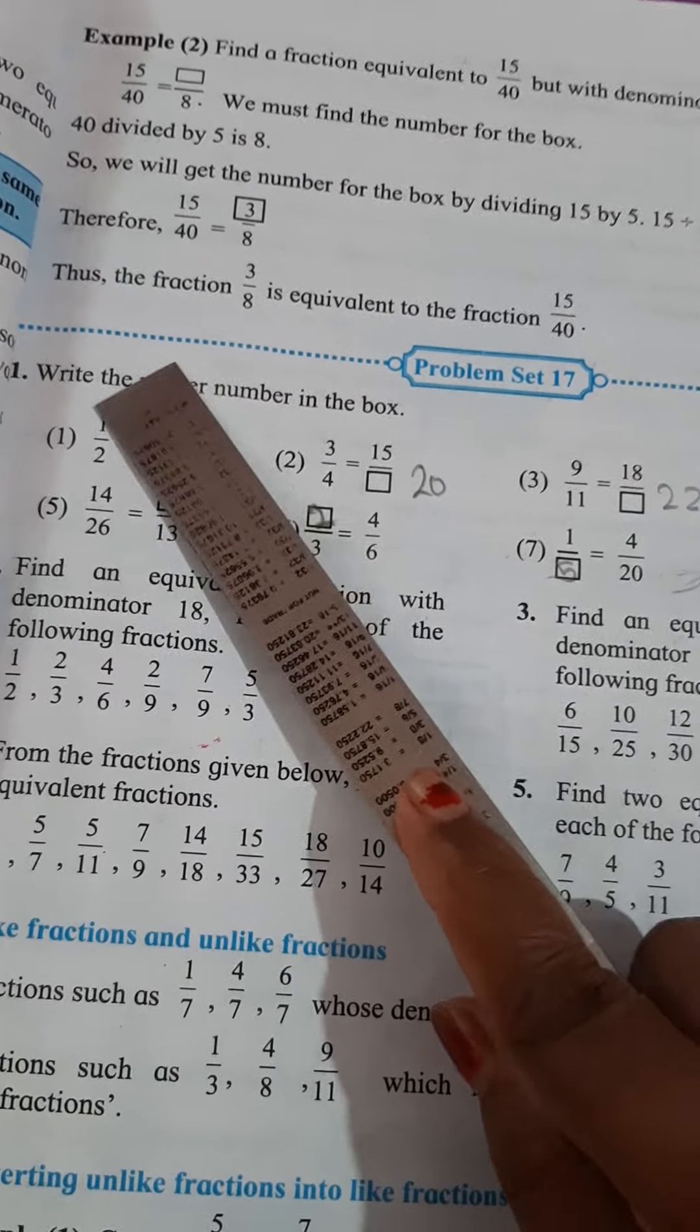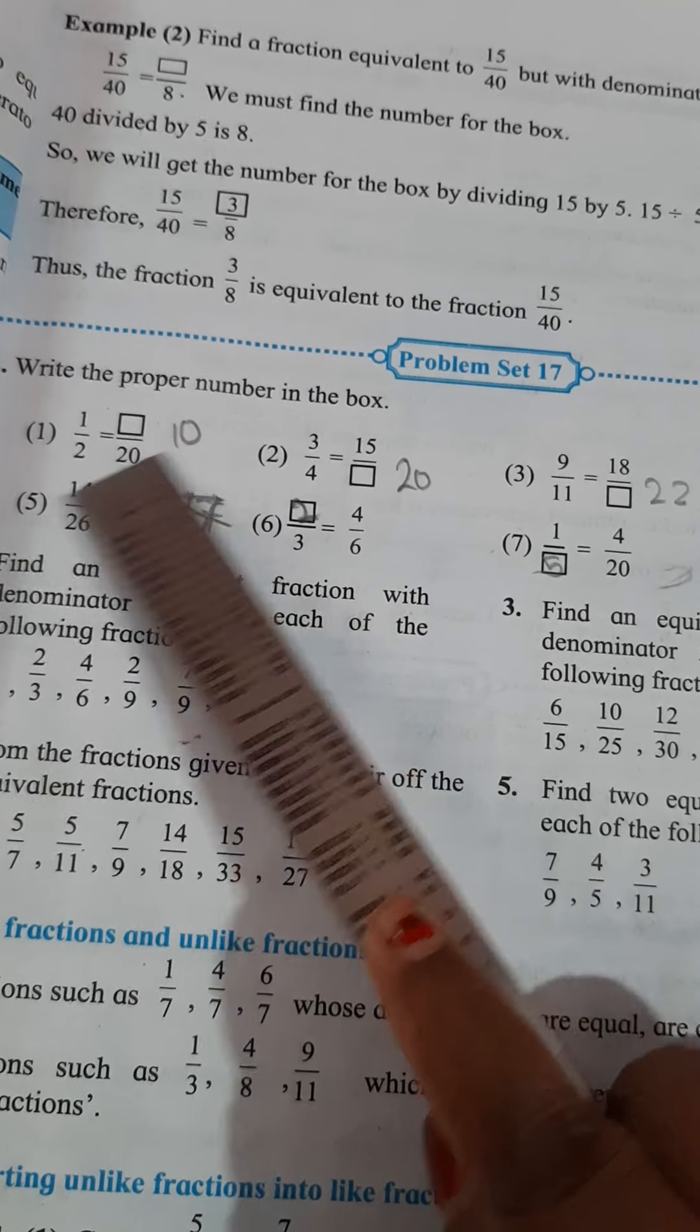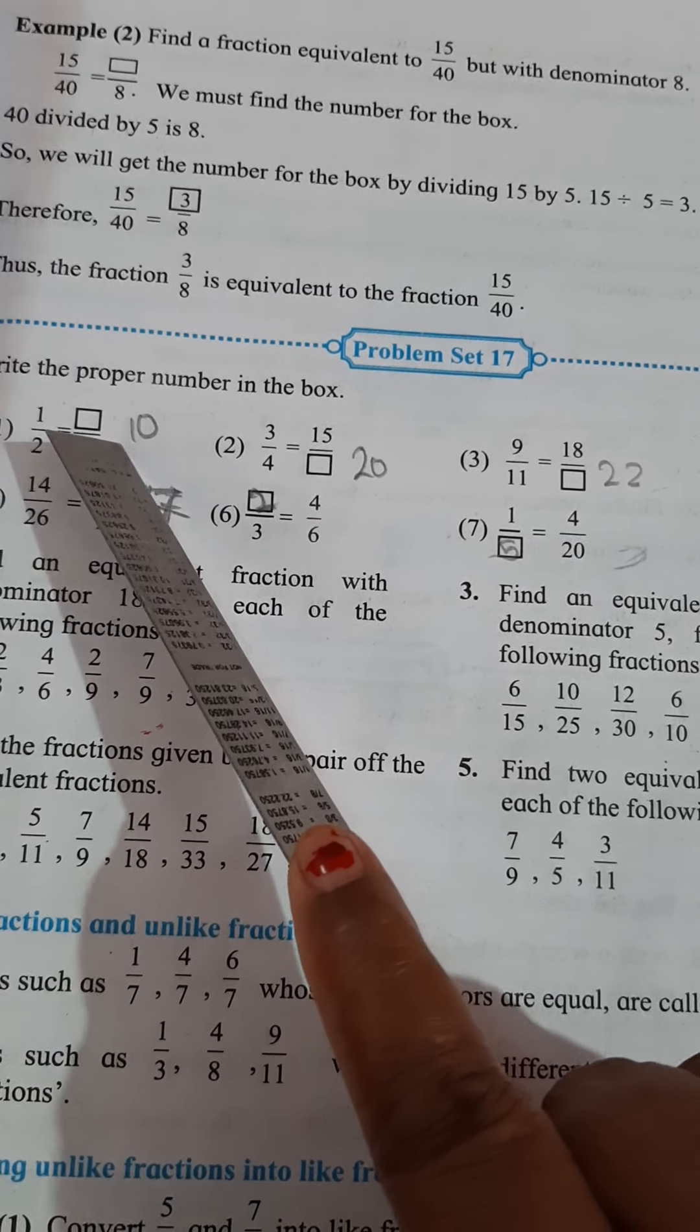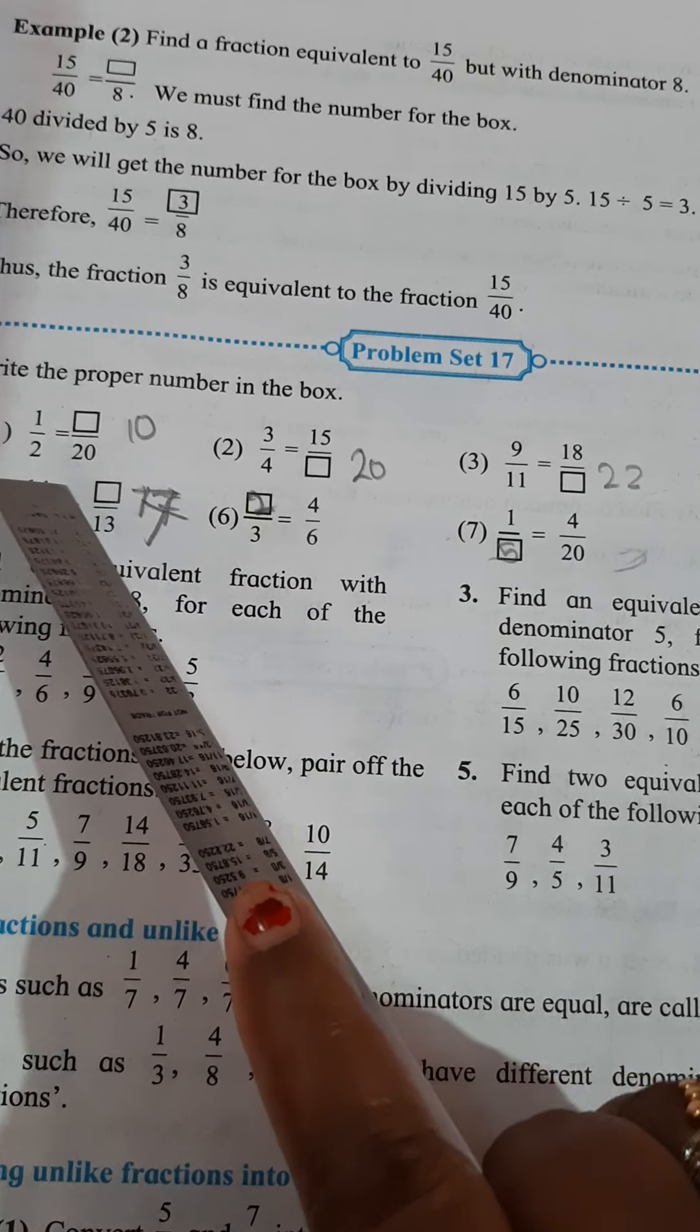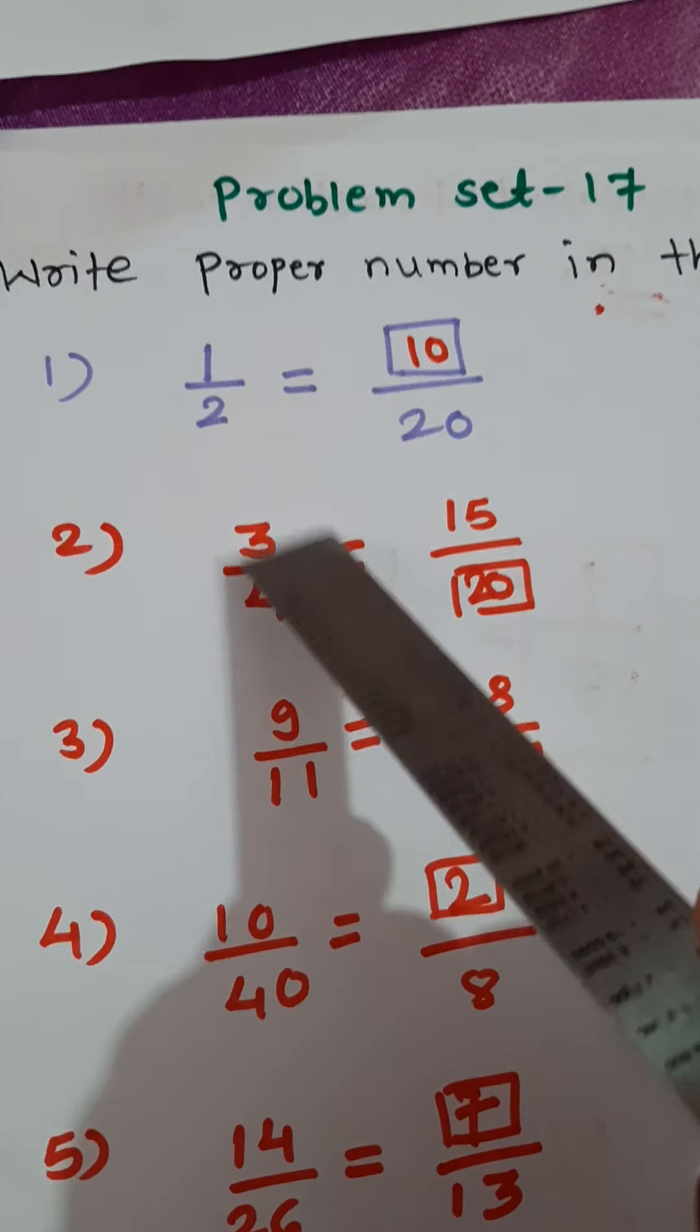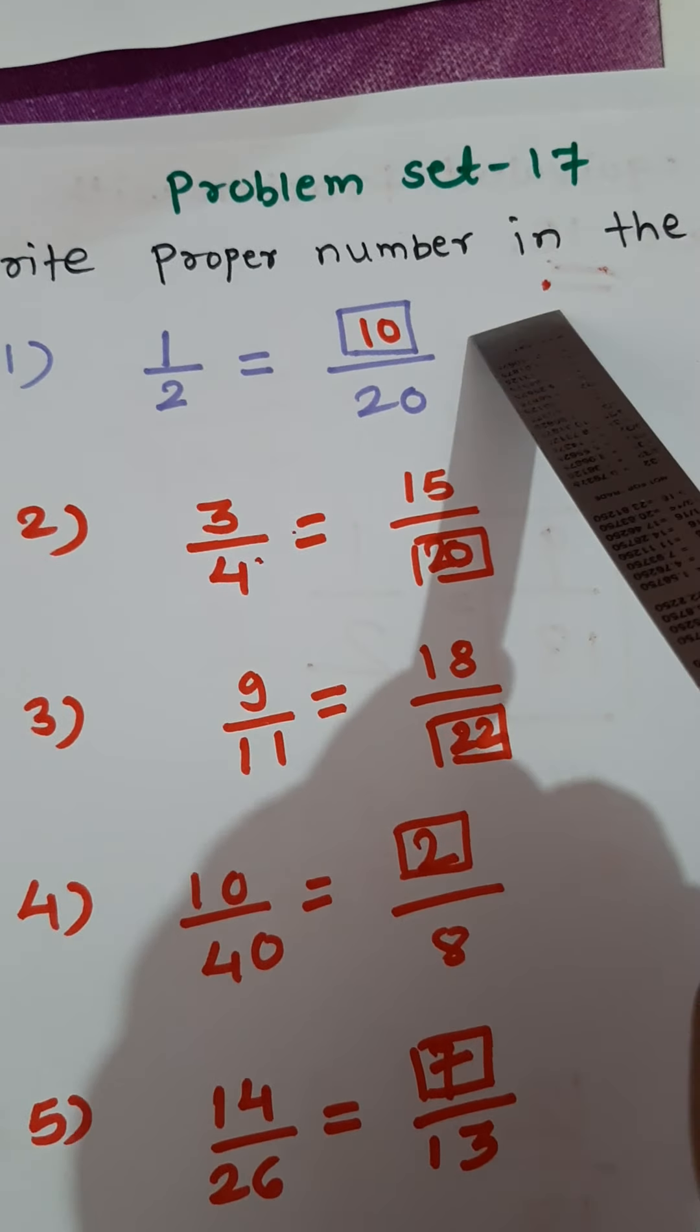See first. 1 upon 2 is equal to dash upon 20. Now how to think? 2 how many are 20? 2 tens are 20. So 1 tens are 10. So here, 1 upon 2, 2 tens are 20. So 1 tens are 10.